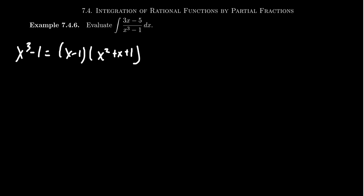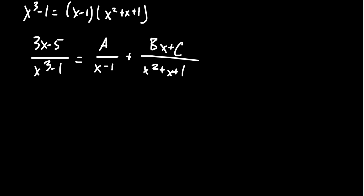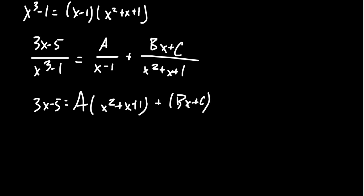Because we have this irreducible quadratic, x² + x + 1, this is going to affect our template. For (3x - 5) over (x³ - 1), we get a partial fraction for each factor: A over (x - 1), and then the second one has x² + x + 1 in the denominator. As this is a proper fraction, the numerator potentially could be a linear polynomial, Bx + C. If we clear the denominators by multiplying both sides by x³ - 1, we get 3x - 5 on the left, A times (x² + x + 1) plus (Bx + C) times (x - 1) on the right.